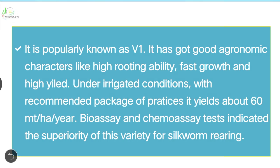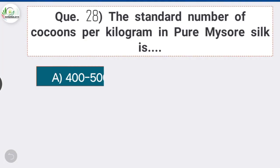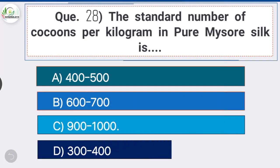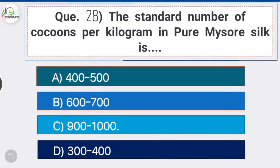Question number twenty-eight: the standard number of cocoons per kilogram in pure Muga silk is — option C is the correct answer — 900 to 1,000. The standard number of cocoons per kilogram in pure Muga silk is 900 to 1,000.